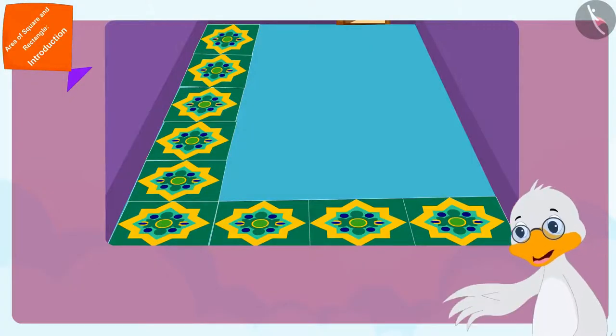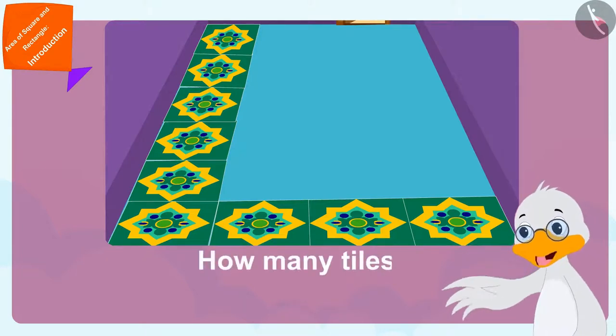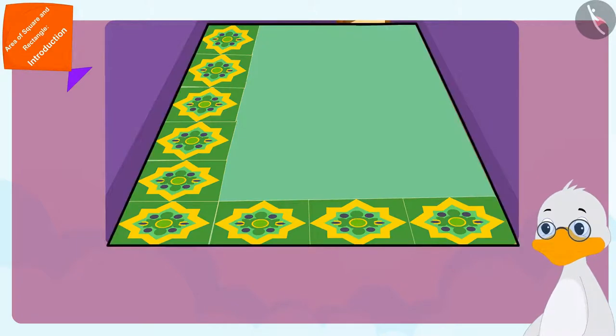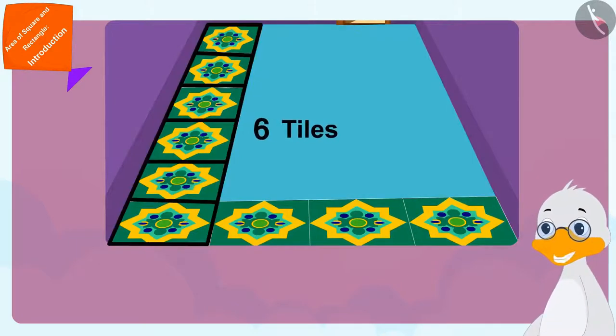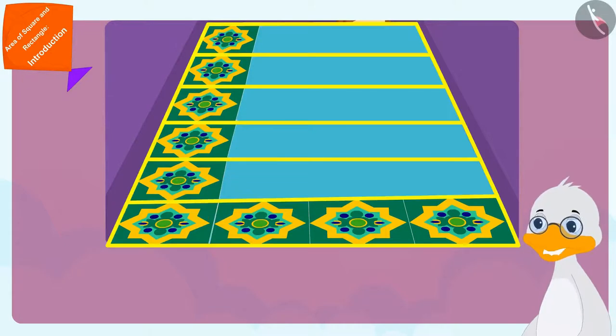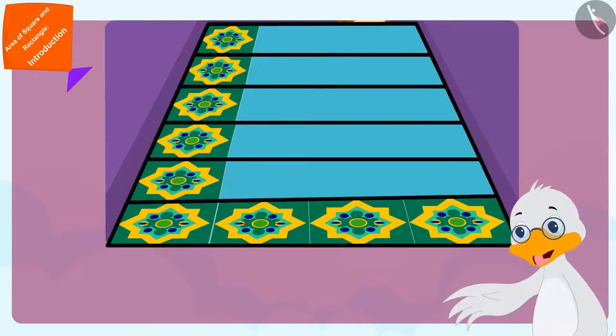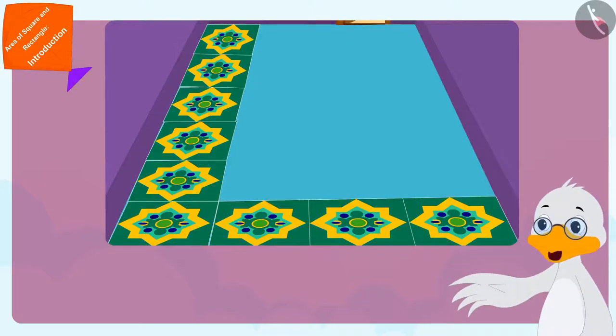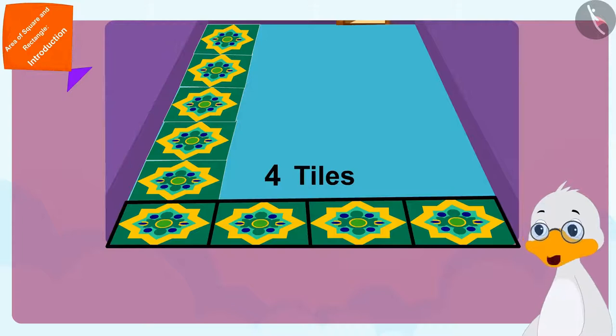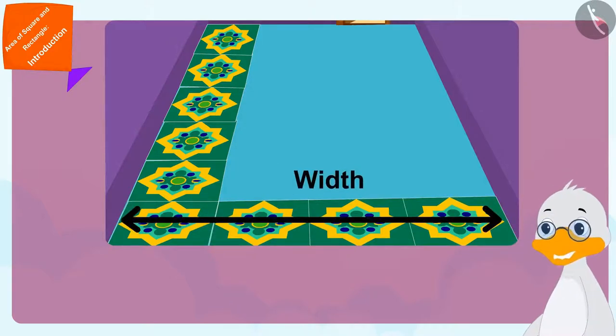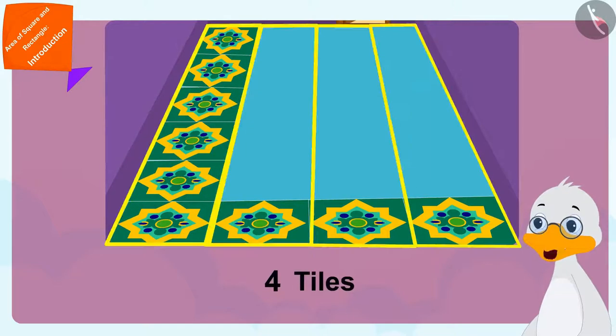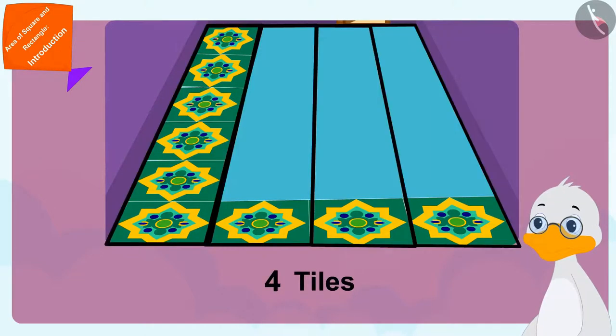But how do I find out how many tiles it will take to completely cover my floor? I have six square shaped tiles in the length of my floor. That means six such horizontal rows will be made. And there are four square shaped tiles in the width of the floor. That means there will be four tiles in each horizontal row.